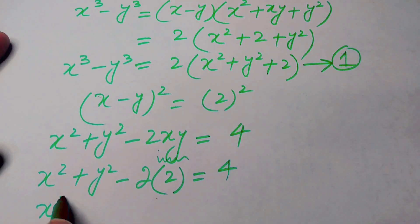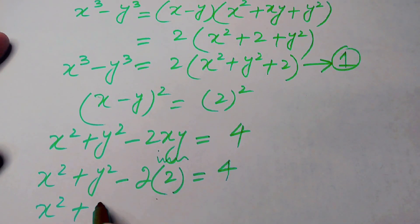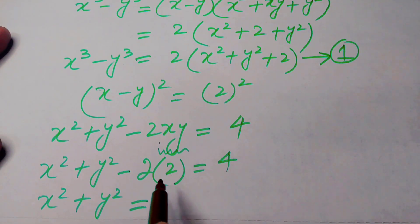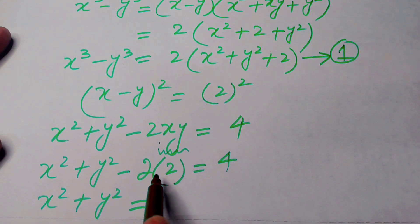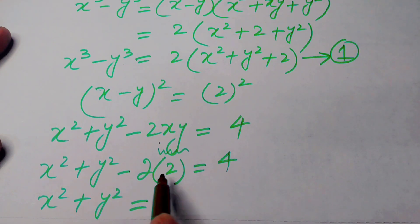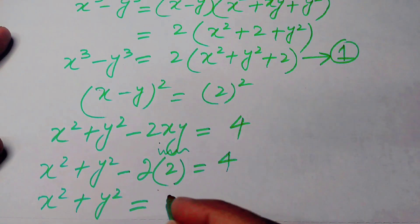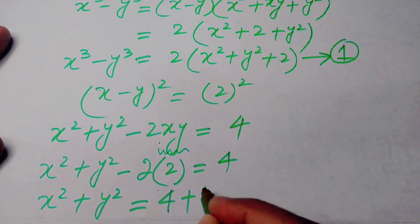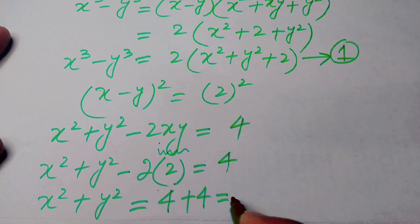When we simplify this term, x squared plus y squared equals 4 plus 4, which is equal to 8.